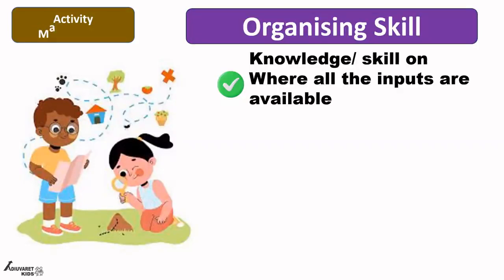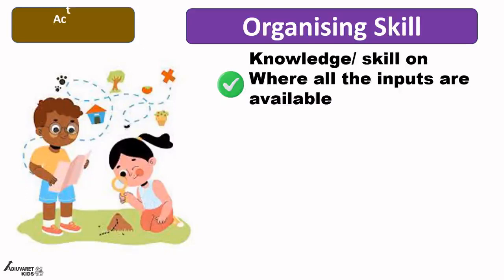Whether the activity is done at school — which part of the school, which activity areas the materials are kept in — the child should understand where exactly things are kept and be able to procure them without delay. The same applies at home. A lot of things will come to mind: when a child knows where the inputs are, the same may apply to books, pencils, compass box, bag, school lunch box, water bottle. Developing this skill through any activity helps the child become a more organized person.